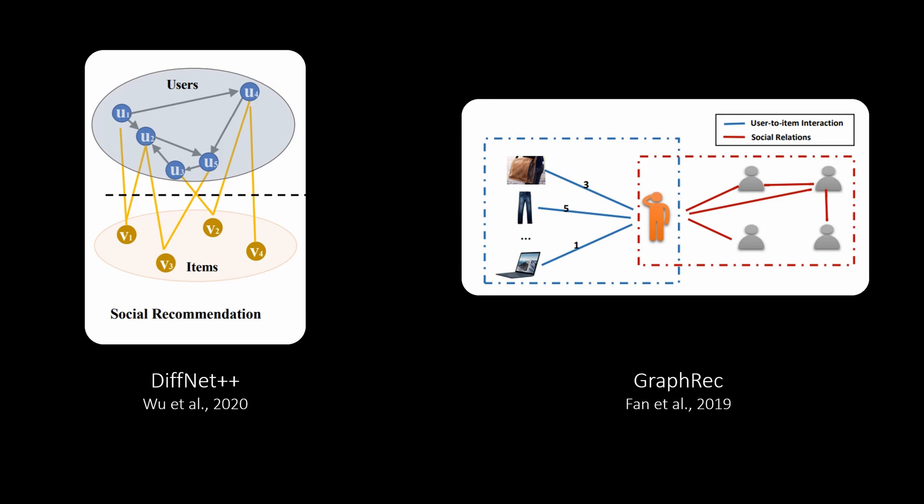Besides social recommendation, there is also knowledge graph based recommendation, which additionally exploits features from a connected knowledge graph.